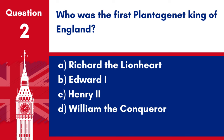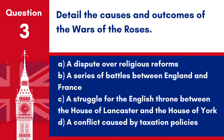Question 2: Who was the first Plantagenet King of England? a. Richard the Lionheart. b. Edward the First. c. Henry the Second. d. William the Conqueror. Answer: c. Henry the Second. Henry the Second was the first Plantagenet King of England, coming to the throne in 1154. His reign marked the beginning of the Plantagenet dynasty that would rule England for several centuries.